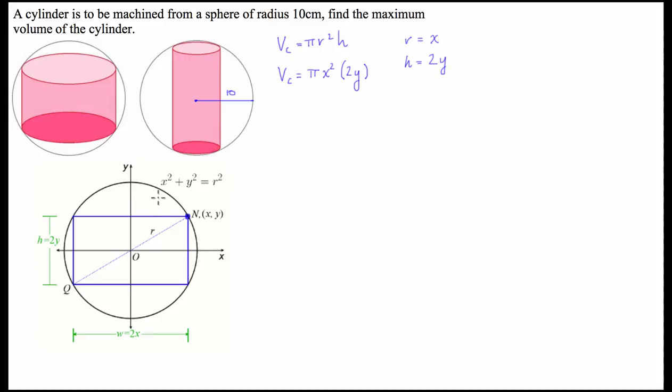The equation for a circle is x squared, like I've written here, plus y squared equals r squared. So we know our radius is 10, so this is going to be bounded by the function x squared plus y squared. It's got to be equal to 100.